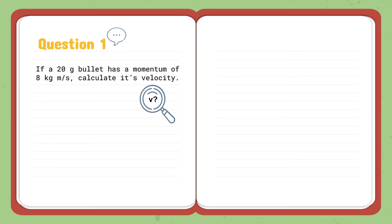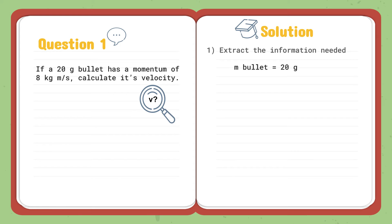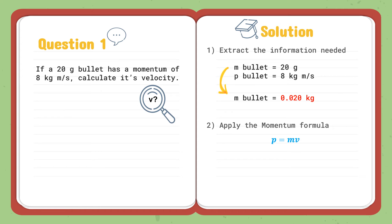For the solution, the first thing to do is extract the information needed: mass of bullet is 20 grams, momentum is 8 kg·m/s. Make sure your units are correct — we need to convert 20 grams to 0.020 kg. Next, apply the momentum formula P equals MV. By substituting the values, we get the velocity equal to 400 m/s.